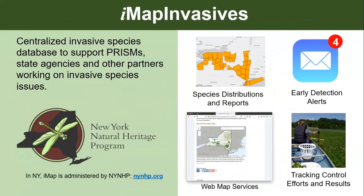For anyone new to IMAP Invasive, it's the centralized invasive species database that supports PRISMS, state agencies, and other partners working on invasive species issues in New York. It's administered by the New York Natural Heritage Program. Some of the things you can do in IMAP are look at species distributions, set up email alerts, use the WebMap services to make WebMaps, and track control efforts and results.